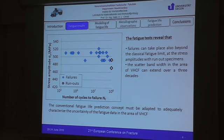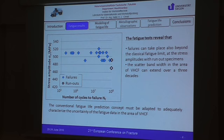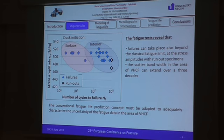Here you can see the S-N curve for the presented alloy. We can see that failures can take place beyond the classical fatigue limit for steels, and we can also see a huge scatter band of experimental results on this diagram. Our aim is to investigate the reasons for scattering, to characterize it, and to try to predict fatigue life of such alloys.